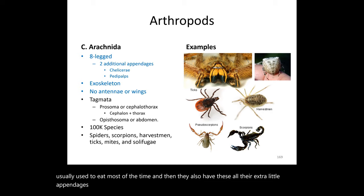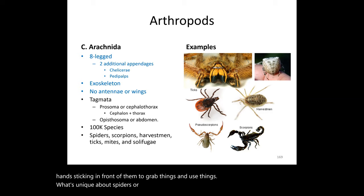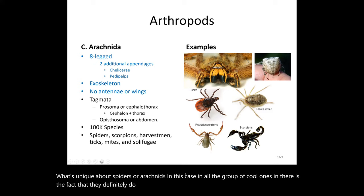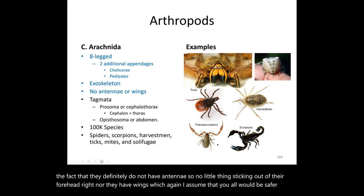Arachnids also have extra little appendages called pedipalps, which are the small hand-like structures in front of them used for wrapping and manipulating things. What's unique about arachnids is that they do not have antennae — no little projections on their forehead — nor do they have wings, which I assume makes you feel somewhat safer.